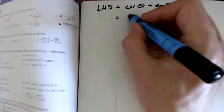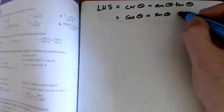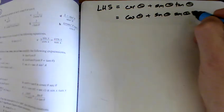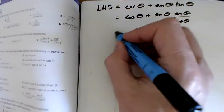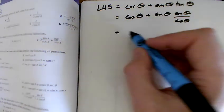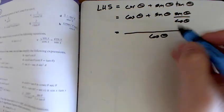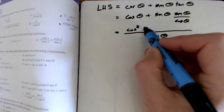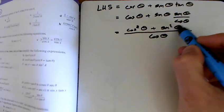Now I'm thinking, what can I do with this? Clearly tan θ is the same as sin θ over cos θ. If I want to put this all over a common denominator of cos θ, then I'd have to times this by cos θ as well, so I get cos² θ plus sin² θ.